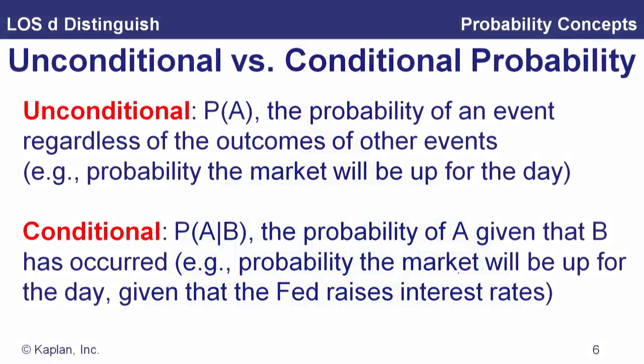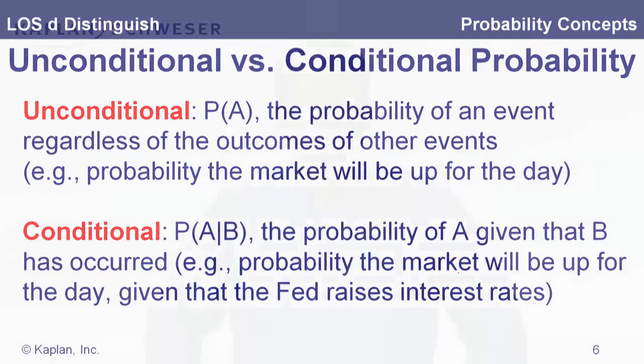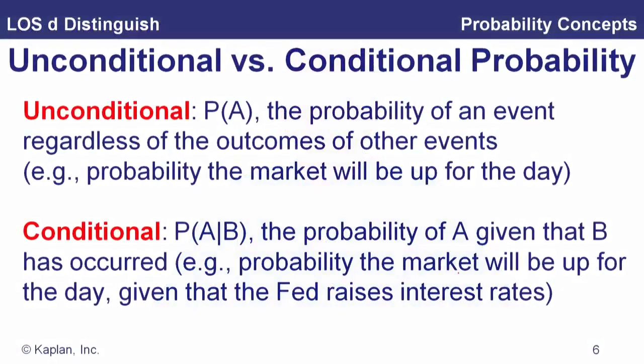We need to define unconditional versus conditional probability — this is a key concept. An unconditional probability, written as P(A), is the probability of event A regardless of any other event; for example, the probability the market will be up for the day. A conditional probability is the probability of an event given that some other event has occurred — we read that vertical bar as 'given.' For example, the probability the market will be up given that the Fed announces an increase in interest rates, which will differ from the unconditional probability.